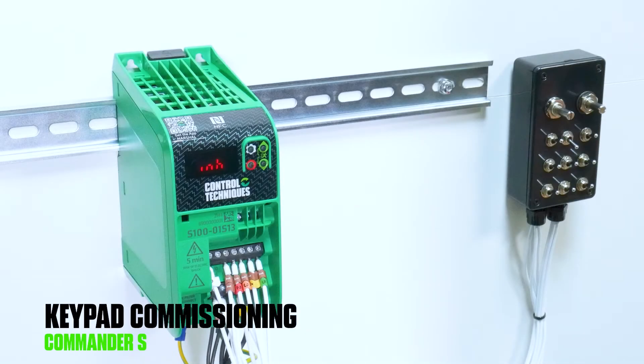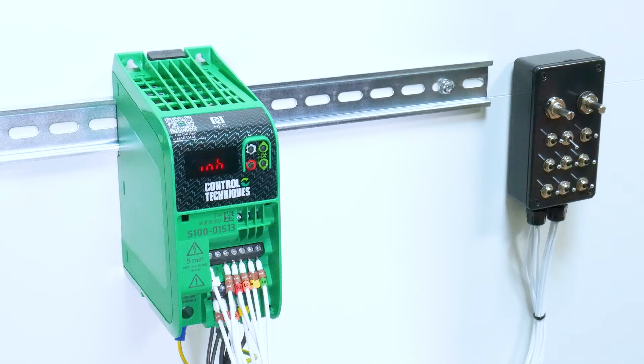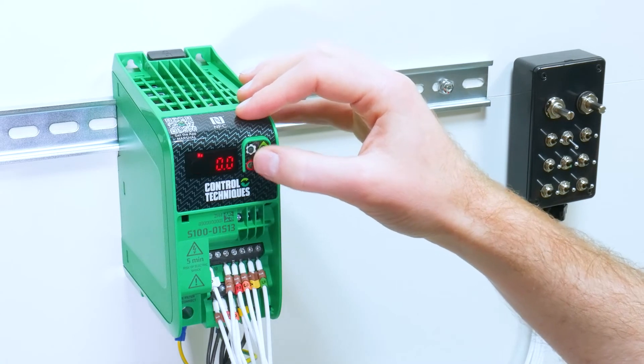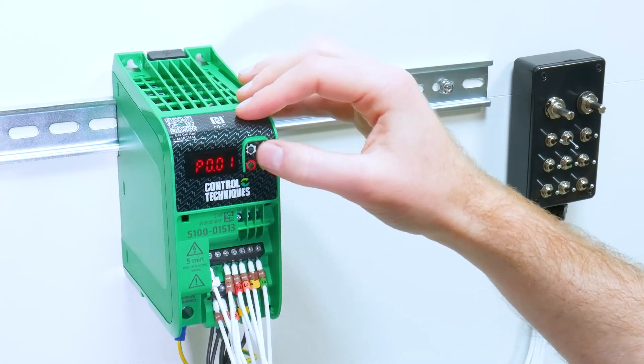When powered up, the drive will display INH, which is for inhibit. Pressing the settings key will go into the parameters. Parameter one is our minimum frequency limit. Parameter two is our maximum frequency limit.